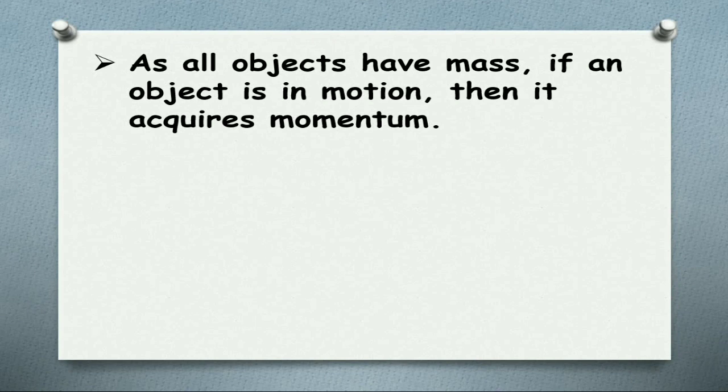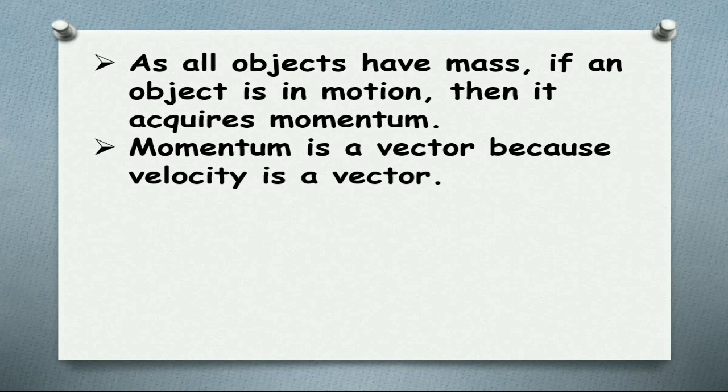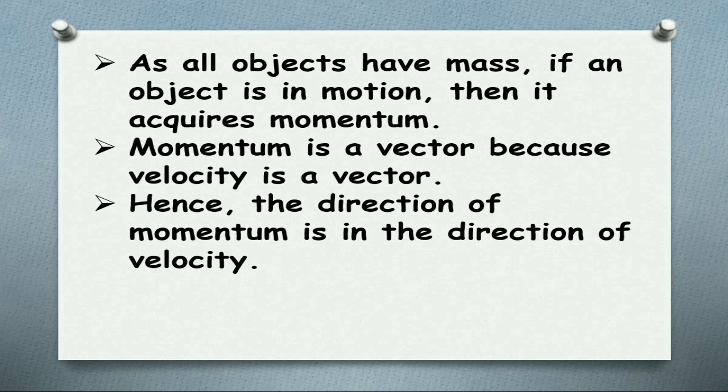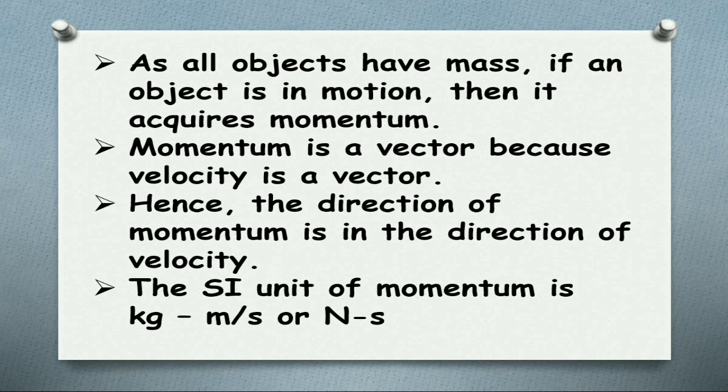As all objects have mass, if an object is in motion, it acquires momentum. Momentum is a vector quantity because it is the product of mass and velocity, and velocity is a vector quantity. Hence momentum is also a vector quantity, and the direction is the direction of the velocity. The SI unit of momentum is kilogram meter per second, or simply newton seconds.